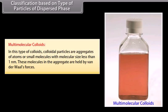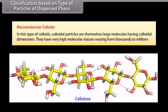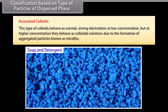On the basis of the nature of particles of dispersed phase, colloids are divided into three categories. Multi-molecular colloids have colloidal particles that are aggregates of atoms or small molecules with molecular size less than 1 nm, held by Van der Waals forces — for example, gold sol. Macromolecular colloids have colloidal particles that are themselves large molecules with very high molecular masses (thousands to millions) — for example, proteins, cellulose, nylon, and plastic. Associated colloids behave as normal strong electrolytes at low concentration but as colloidal solutions at higher concentration due to formation of aggregated particles called micelles — for example, soaps and detergents.